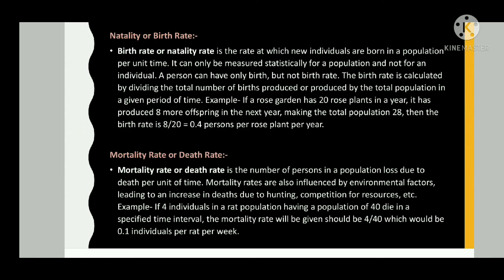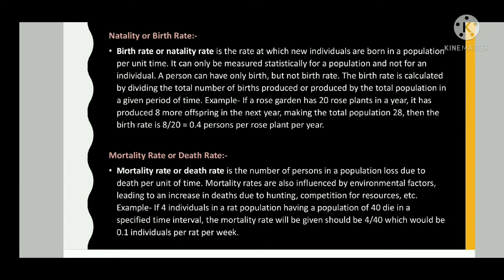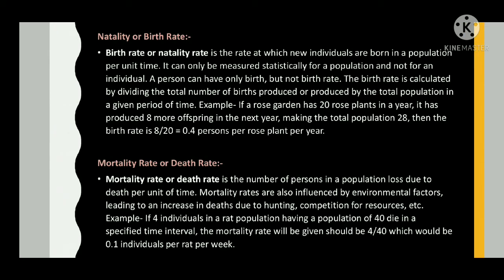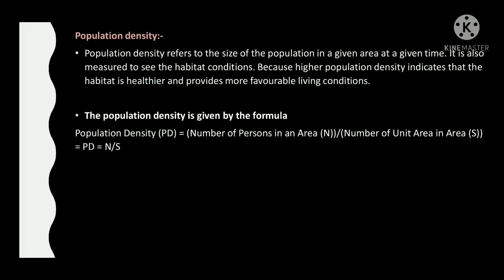Mortality rate or death rate is the number of individuals in a population lost due to death per unit of time. Mortality rates are also influenced by environmental factors leading to an increase in deaths due to hunting, competition for resources, etc. For example, if 4 individuals in a rat population of 40 die in a specified time interval, the mortality rate would be 4 divided by 40, which equals 0.1 individuals per rat per week.